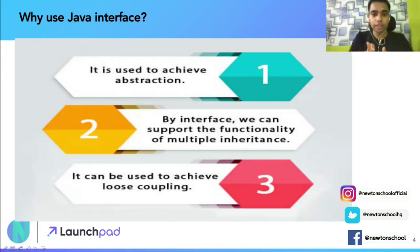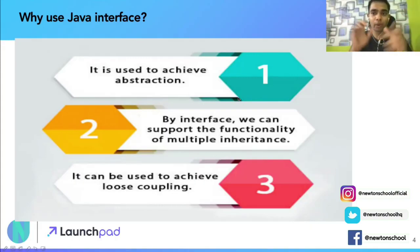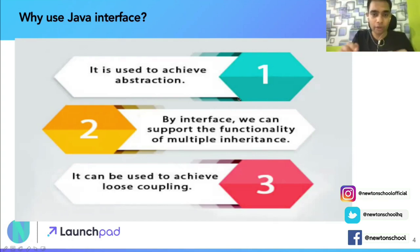Second, by using interfaces we can support the functionality of multiple inheritance. The problem of multiple inheritance in classes arises because of the diamond problem — a very common problem frequently asked in interviews. But when we use interfaces, we can overcome the diamond problem and Java is able to support multiple inheritance. We will see this in code at the end of the video.